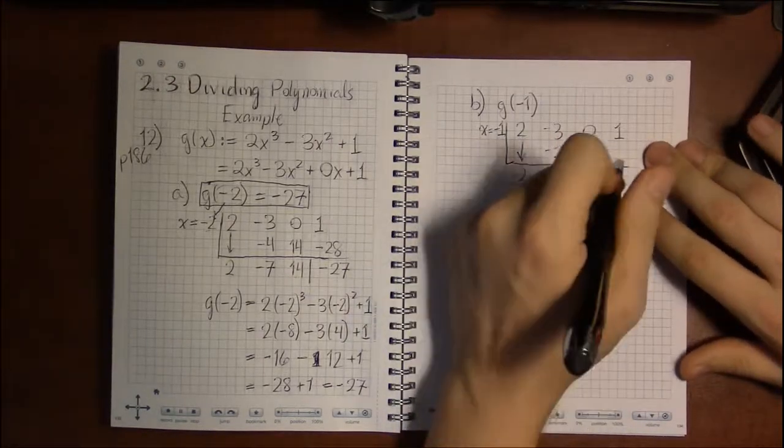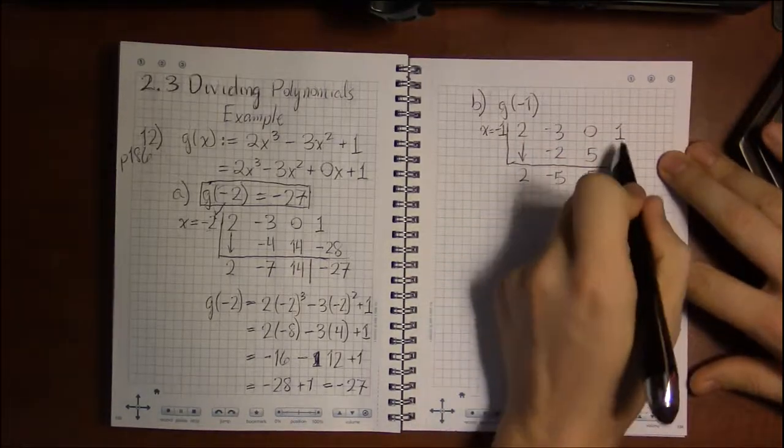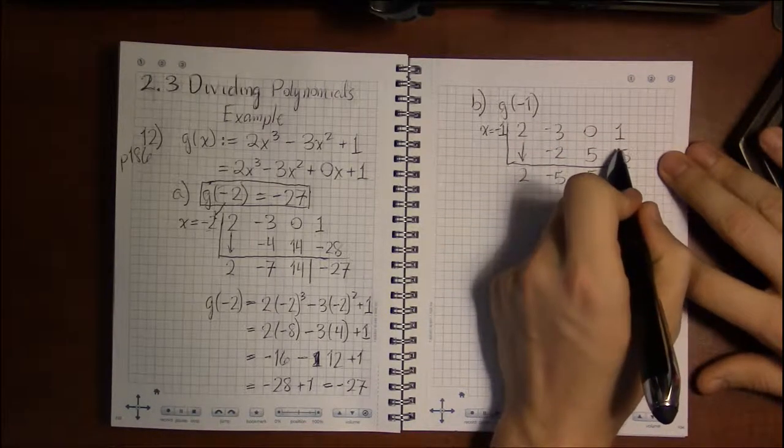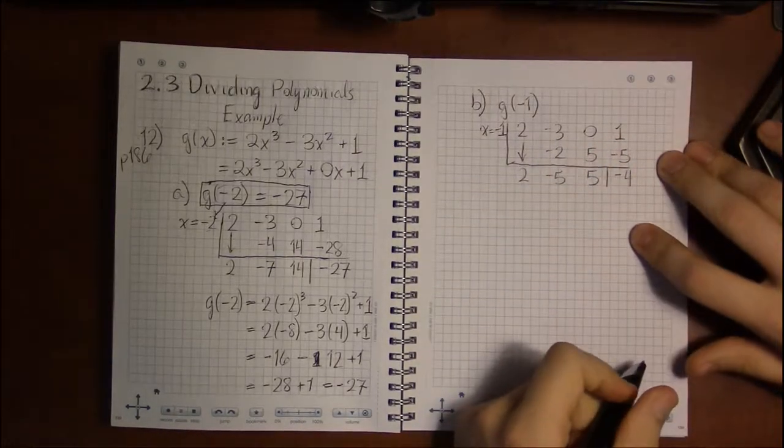Multiply 5 times minus 1, you get minus 5. And the last number we add to get that last number, 1 plus minus 5 is minus 4.